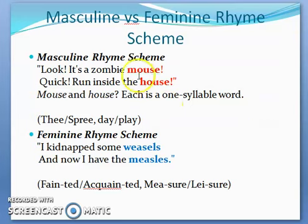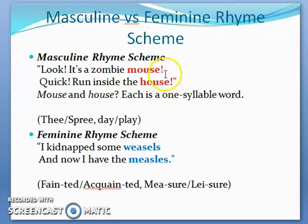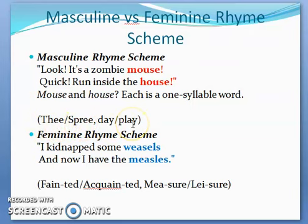The masculine rhyme scheme usually ends with single-syllable words — for example, 'mouse' and 'house' each have just one syllable. Words like 'acquainted' or 'measles' have two syllables, so you need a little pause in the center. With monosyllabic words you don't need to stop. Masculine rhyme scheme is the rhyme scheme in which the last rhyming words are monosyllabic — short words — and this is usually used to add emphasis at the end. Other examples include 'free,' 'day,' and 'play.'